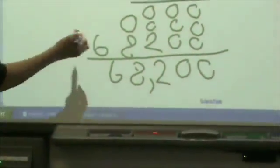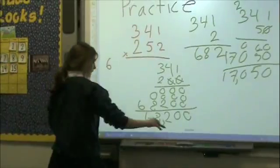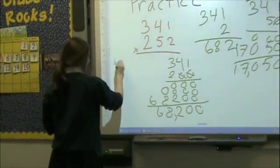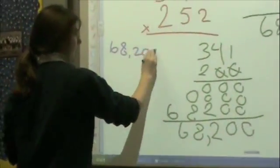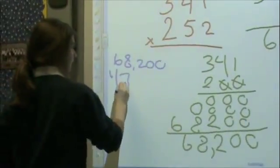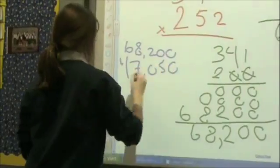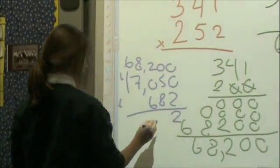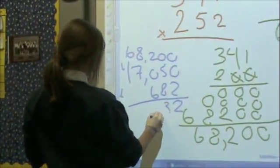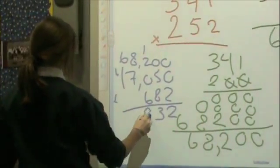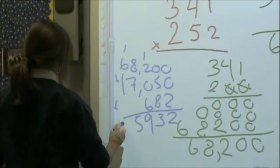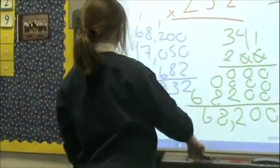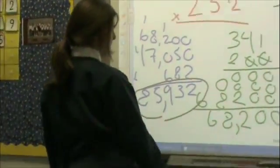So we're going to add all three of these up — 682, 17,050, and 68,200 — and our final answer is 85,932.